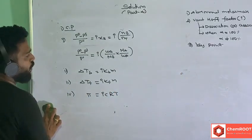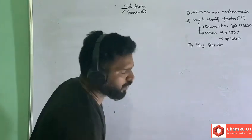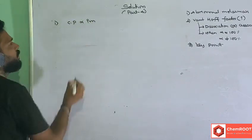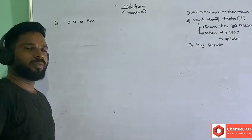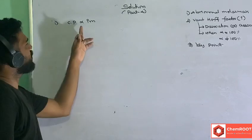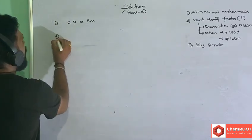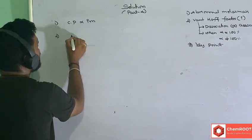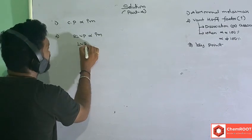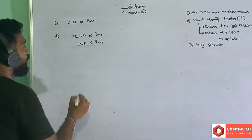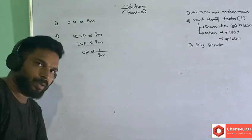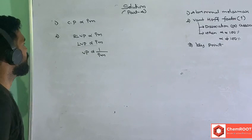Finally, we will go over some important key points related to the Van't Hoff factor and colligative properties. Any colligative property is directly proportional to i × m. That's the key point. Elevation in boiling point, depression in freezing point, osmotic pressure, and relative lowering of vapor pressure — all these properties are directly proportional to i × m. Vapor pressure itself is inversely proportional to i × m, because when i value increases, the lowering of vapor pressure takes place.